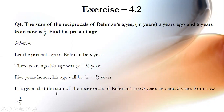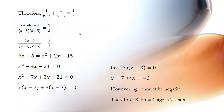It is given that the sum of the reciprocals of Rahman's age three years ago and five years from now is 1 by 3. Rahman's age three years ago is x minus 3, and five years from now is x plus 5. The reciprocal of x minus 3 is 1 by (x minus 3), and the reciprocal of x plus 5 is 1 by (x plus 5). So 1 by (x minus 3) plus 1 by (x plus 5) equals 1 by 3.